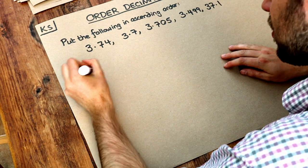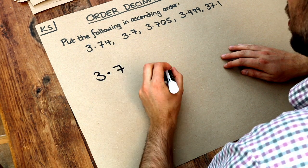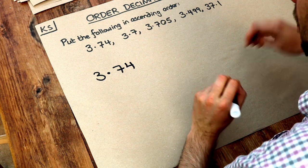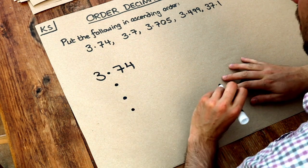So let's write these numbers where the digits of the same place value appear in the same column. We've got 3.74 and to keep the same place value I'm going to put this decimal point in the same place.